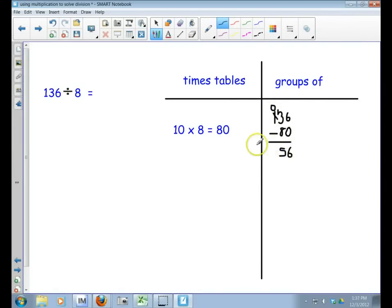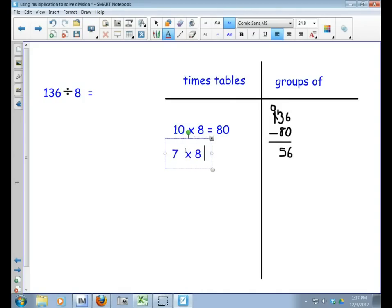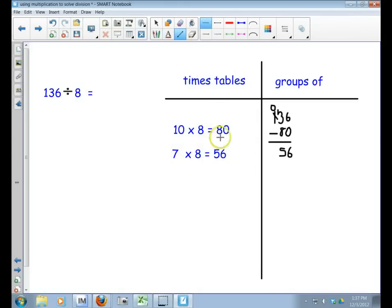Now I'm trying to think, what can I times the 8 by that's going to get me close to 56? Well, I know that 7 times 8 equals 56. So when I take my 56 and subtract 56, I have none left over.